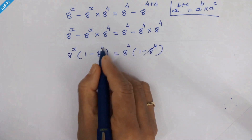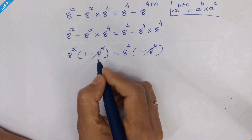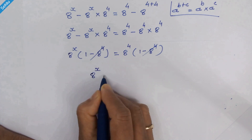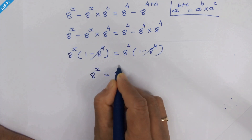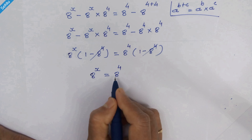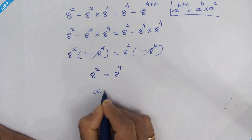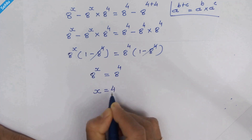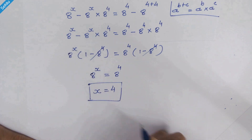The two brackets cancel out, so we have 8 raised to x is equal to 8 raised to 4. Since both sides have the same base, we can equate their exponents, giving us x is equal to 4 as our answer.